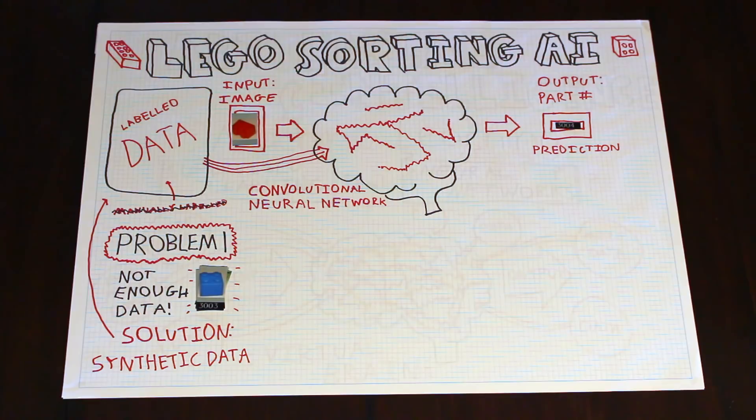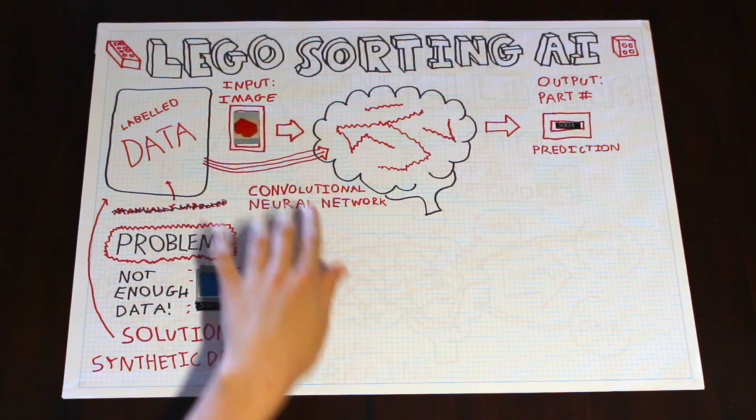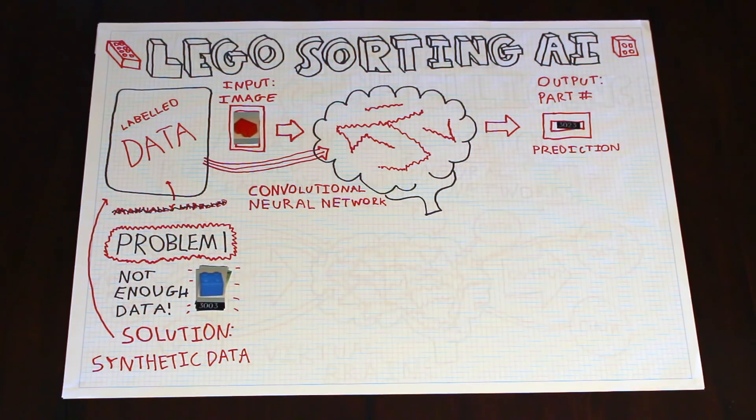Unfortunately, it doesn't work. If we try to get the neural network to classify a real image, it'll give the wrong result most of the time.